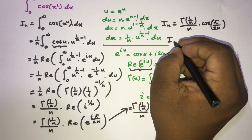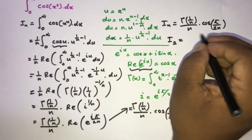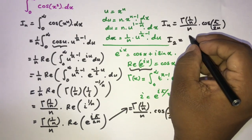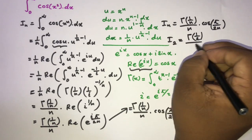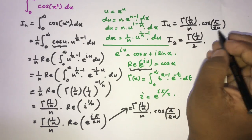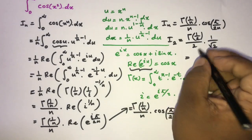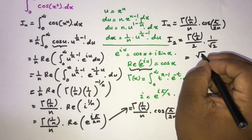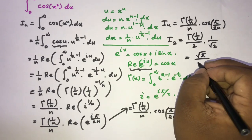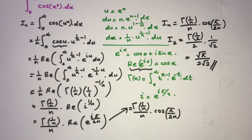To get our original integral, we set n = 2. So I_2 = Gamma(1/2) / 2 times cosine of π/4. We know cos(π/4) = 1/√2 and Gamma(1/2) = √π. This gives √π / 2 times 1/√2 = √π / (2√2), which is the final answer.